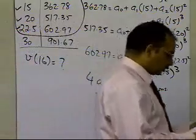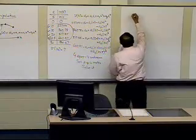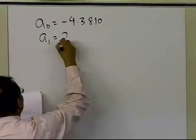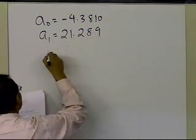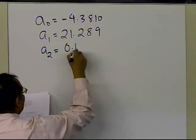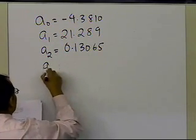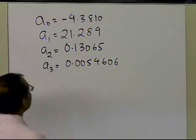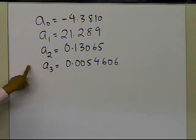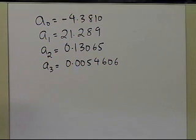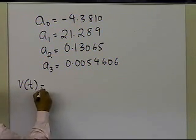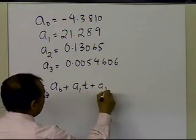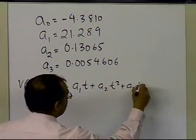After solving these four equations and four unknowns, I get: a0 = −4.3810, a1 = 21.289, a2 = 0.13065, and a3 = 0.0054606. Those are the values of the coefficients from my third-order interpolant, which means I can substitute these values into the coefficients of the third-order polynomial: a0 + a1*t + a2*t² + a3*t³.